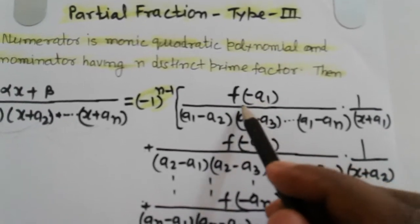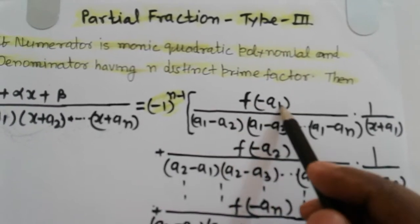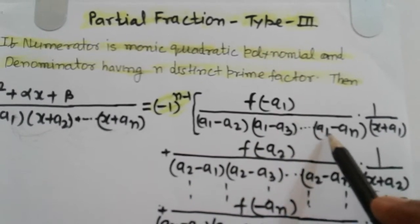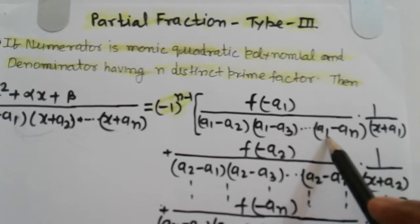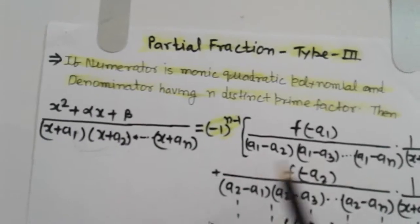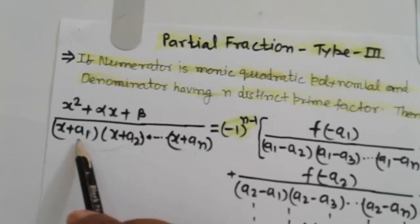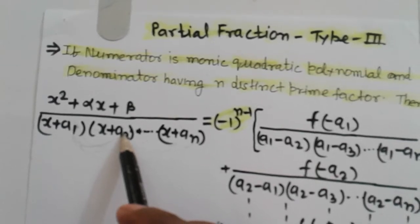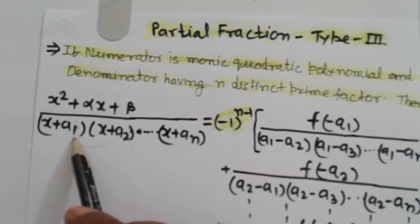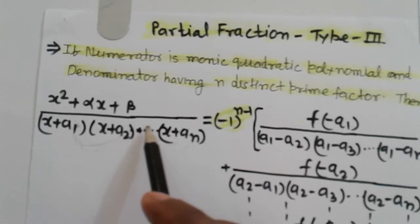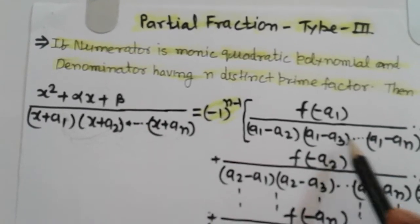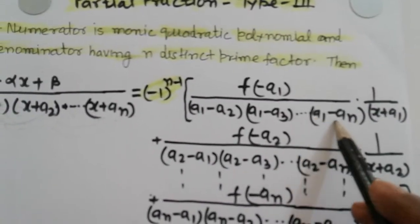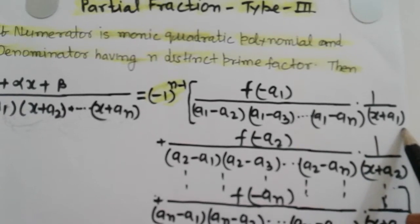We get the first term f of minus a1 in the numerator. The denominator is (a1 minus a2)(a1 minus a3)...(a1 minus an), dot 1 upon (x plus a1). Each factor is the first prime factor constant minus the subsequent prime factor constants, continuing up to a1 minus an.